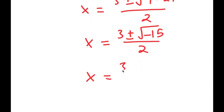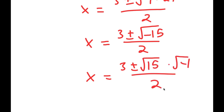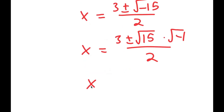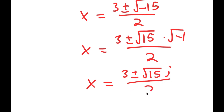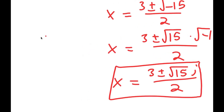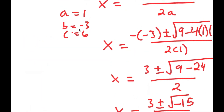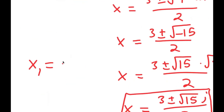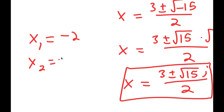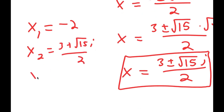The square root of negative 15 is the same as the square root of 15 times the square root of negative 1. The square root of negative 1 is the imaginary number i. So x equals 3 plus or minus the square root of 15 times i, all over 2. So my three solutions are x equals negative 2, x equals 3 plus root 15 i over 2, and x equals 3 minus root 15 i over 2.